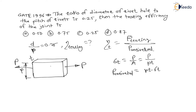Now if I put a rivet in this plate and make a hole of diameter d, the tensile stress on this plate will act on the tearing area. For tearing, we will have the minimum area, where d gets subtracted.